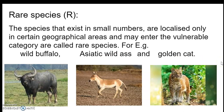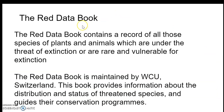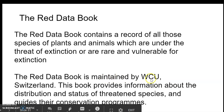Next is the topic of the Red Data Book. The World Conservation Union has made a book called the Red Data Book. In the Red Data Book, all species of plants and animals that are under the threat of extinction — those that are endangered, rare, or vulnerable — are recorded. The Red Data Book is maintained by the World Conservation Union from Switzerland.